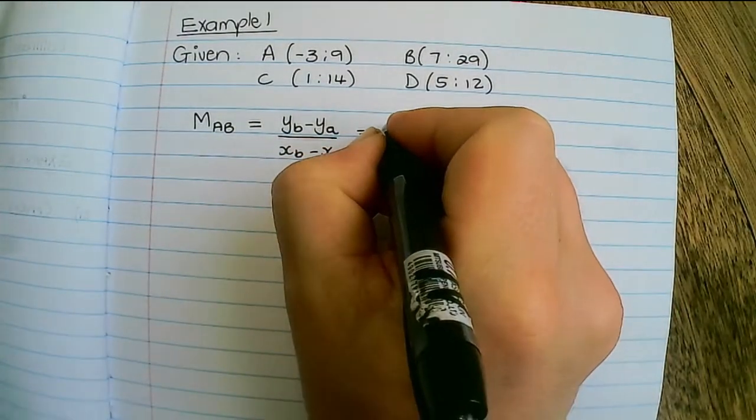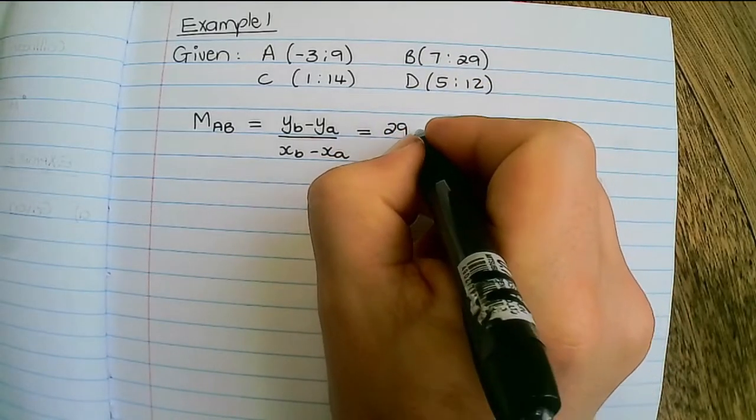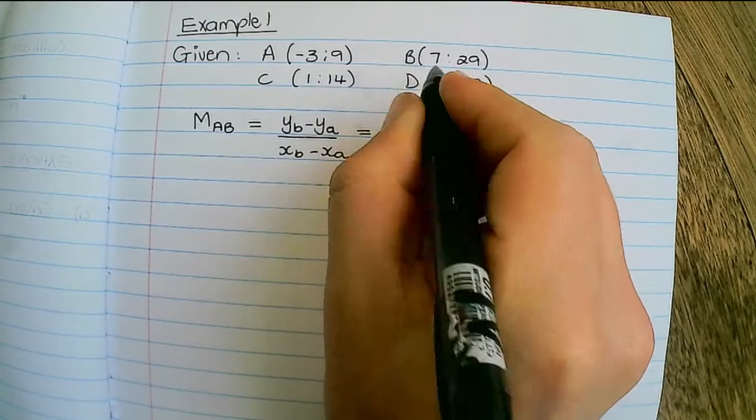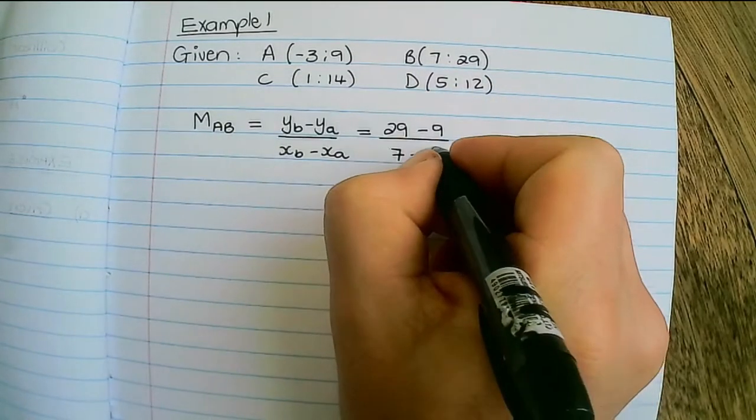So that would be 29, that's the y of B minus the y of A, over the x of B minus the x of A.